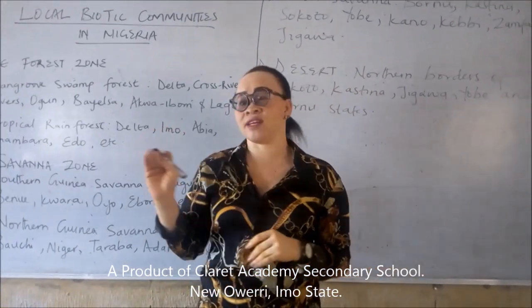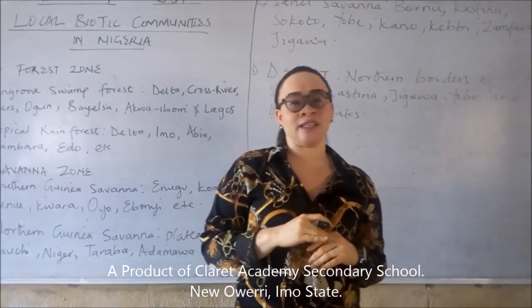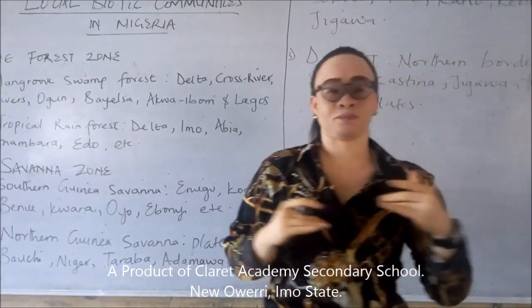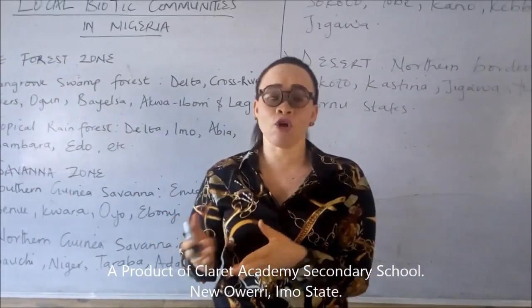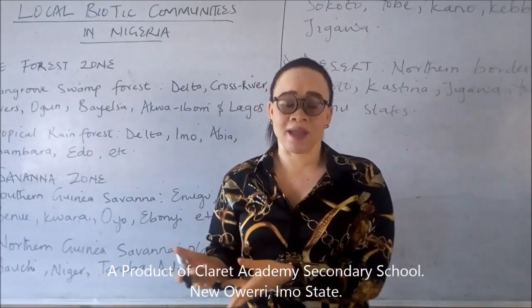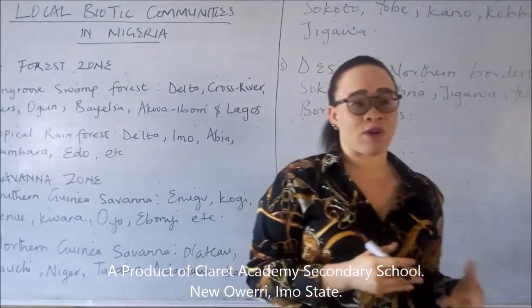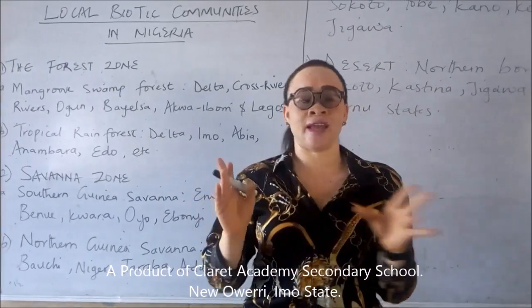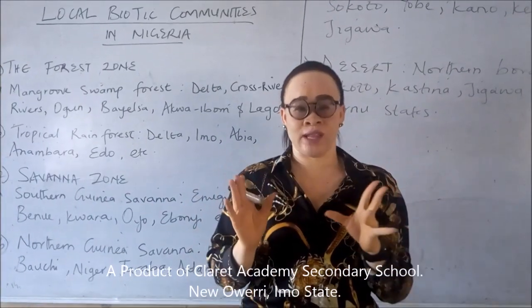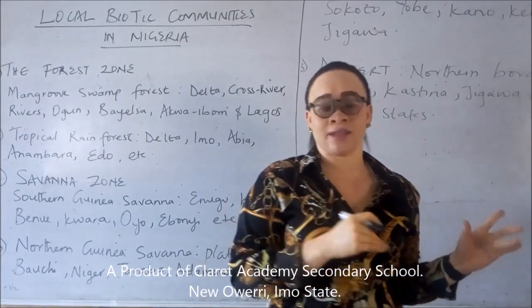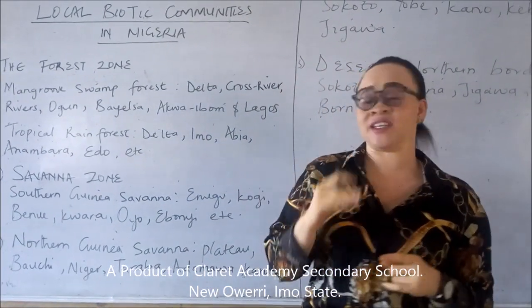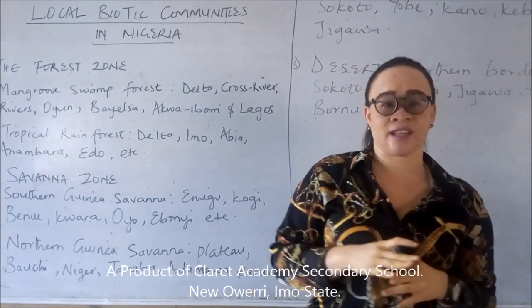Now the trees that are found in this place include Iroko, Obeche, and Mahogany. The trees are evergreen and they have broad leaves because of the abundant rainfall. And also the forest region is stratified in layers.